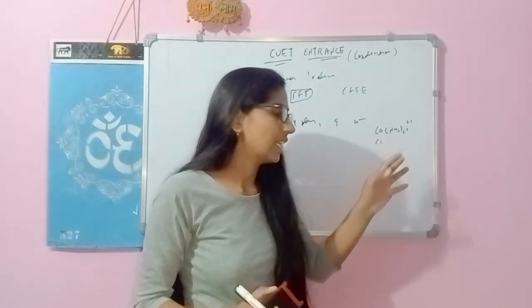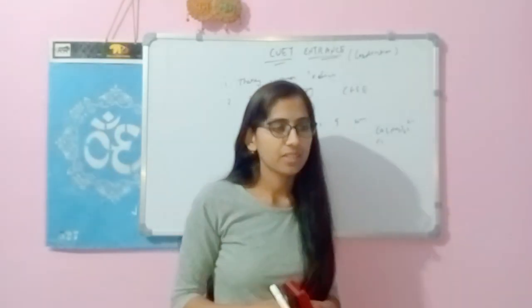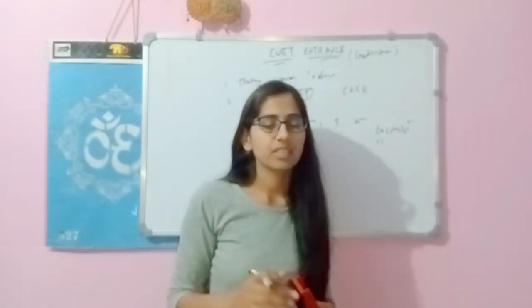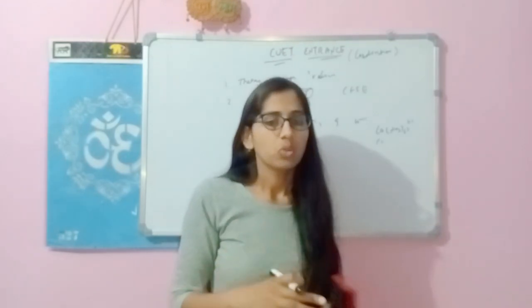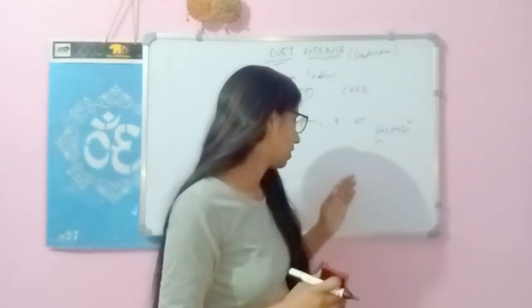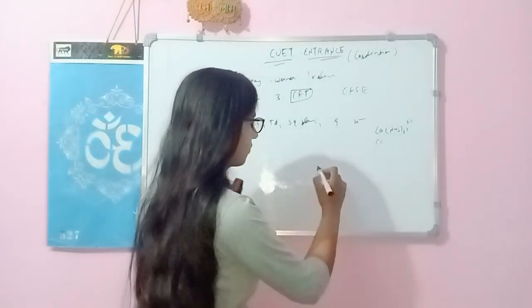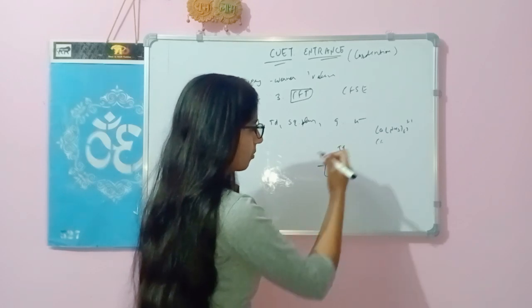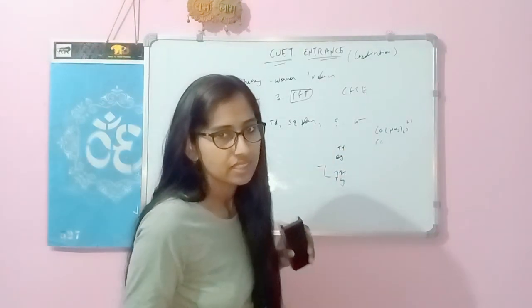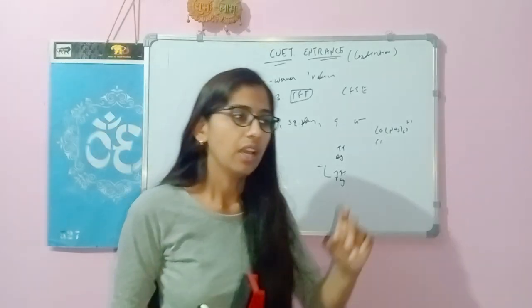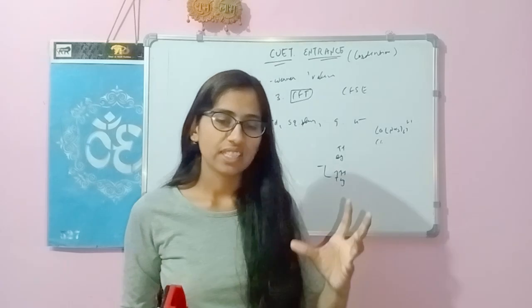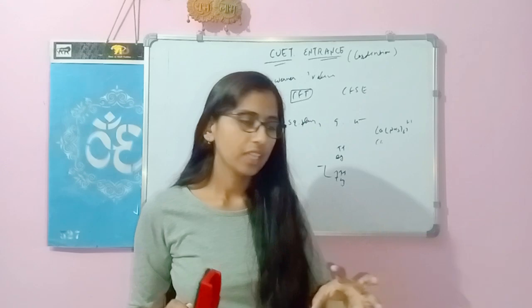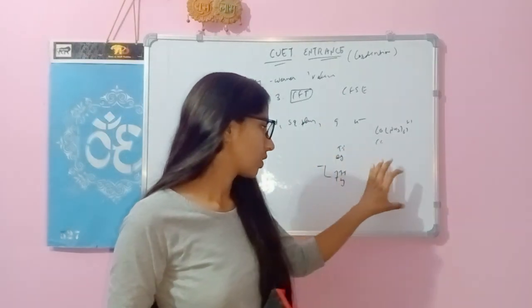You can also be asked about square planar, linear, and trigonal planar geometries — which has highest energy, which has lowest energy. High-spin and low-spin questions are also important: a strong-field ligand causes pairing and gives low-spin complexes, while a weak-field ligand gives high-spin complexes. You can be asked to calculate these values.